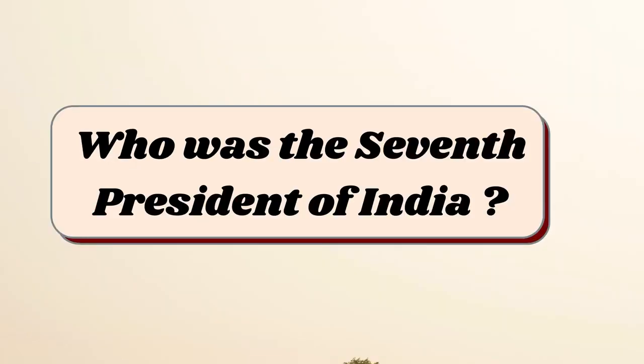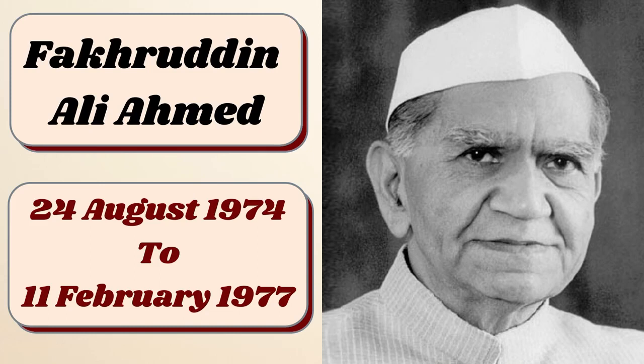Who was the seventh president of India? Fakhruddin Ali Ahmed was the seventh president of India, from the 24th of August 1974 to the 11th of February 1977.